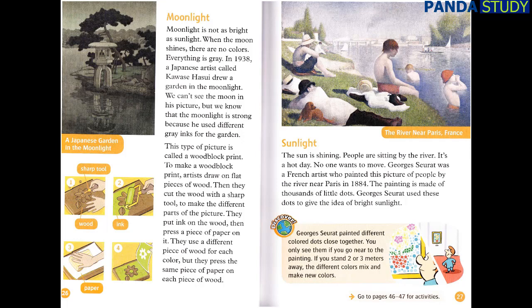The sun is shining. People are sitting by the river — it's a hot day and no one wants to move. Georges Seurat was a French artist who painted this picture of people by the river near Paris in 1884. The painting is made of thousands of little dots. Georges Seurat used these dots to give the idea of bright sunlight. He painted different coloured dots close together — you only see them if you go near to the painting. If you stand two or three metres away, the different colours mix and make new colours.